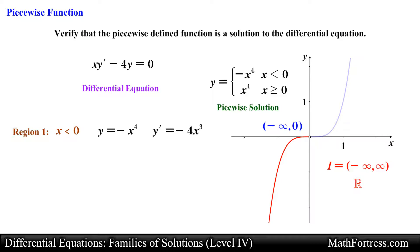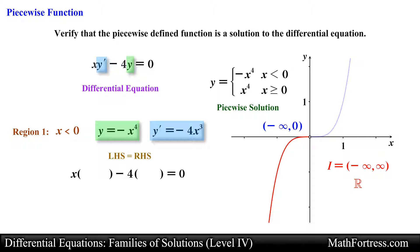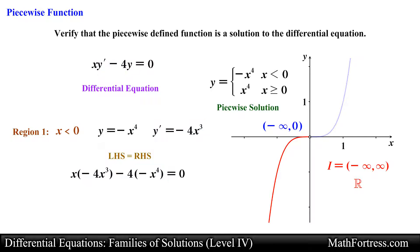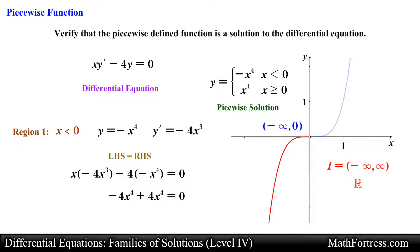Next we go ahead and substitute this expression into the ODE. Substituting the derivative and the solution we obtain the following. From here let's simplify by distributing the variable x and the constant negative 4. Lastly we collect like terms. In the end we obtain 0 equals 0. Hence this piecewise function is indeed a solution to the ODE at the interval negative infinity to zero exclusive.